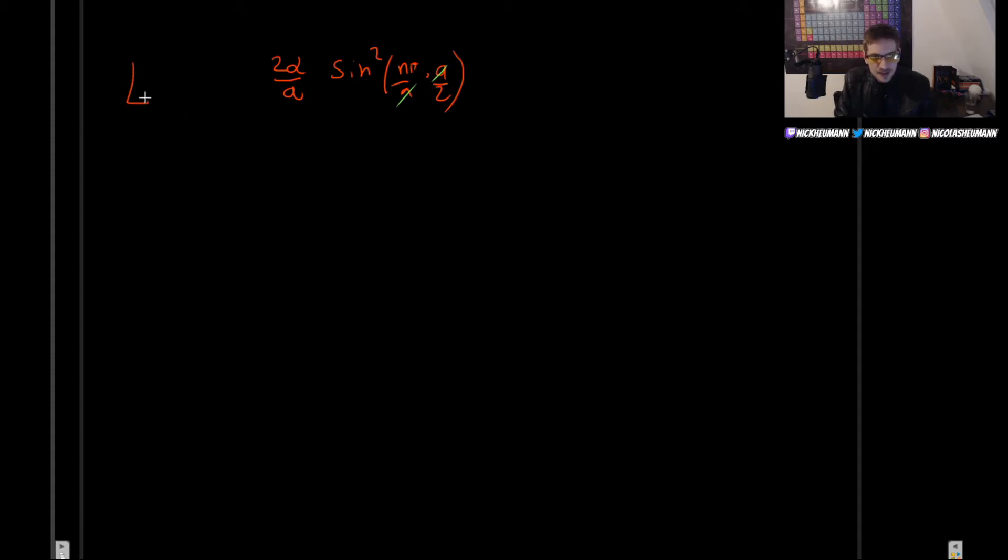Now, this is the first order correction to the energy levels. So what exactly happens here? We have sine of n pi over 2. So this result will depend on the value of n. So let's see what happens if we have even or odd values of n. Let's begin with n odd.